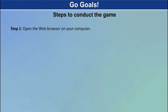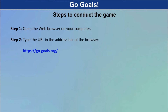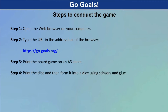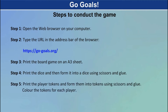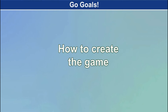Steps to conduct the game. Step 1: open the web browser on your computer. Step 2: type the URL in the address bar of the browser. Step 3: print the board game on an A3 sheet. Step 4: print the dice and then form it into a dice using scissors and glue. Step 5: print the player tokens and form them into tokens using scissors and glue. Color the tokens for each player. Step 6: take printouts of the multiple-choice question sheet.